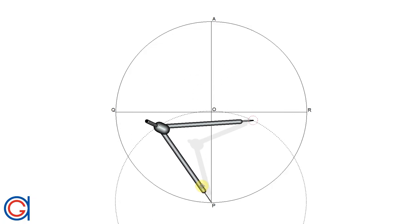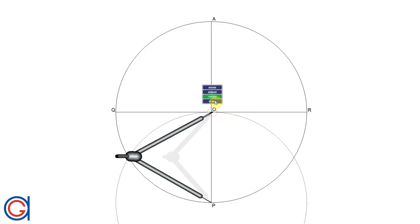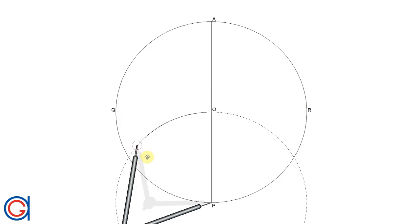So the next step: setting the compass to the length of the given radius OR and setting the compass on point P, we scribe an arc to the left until it cuts the circumference at a new point which we will call point S, as can be seen here.